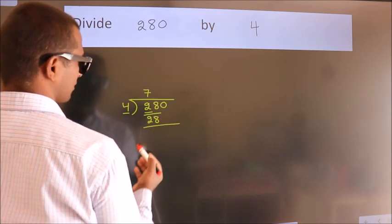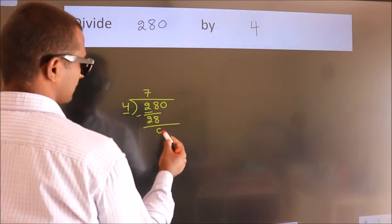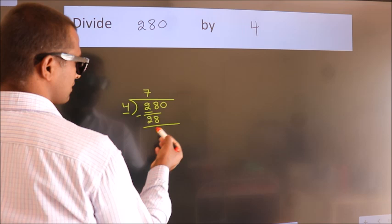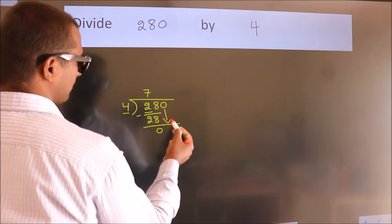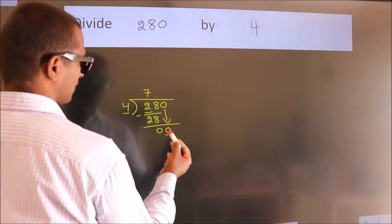Now we should subtract. We get 0. After this, bring down the next number. So 0 down. So 0.